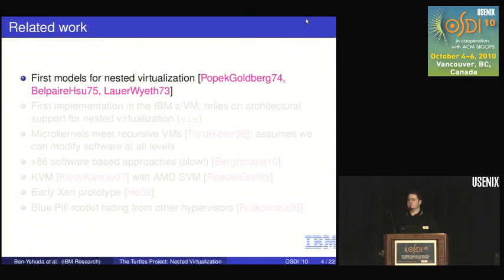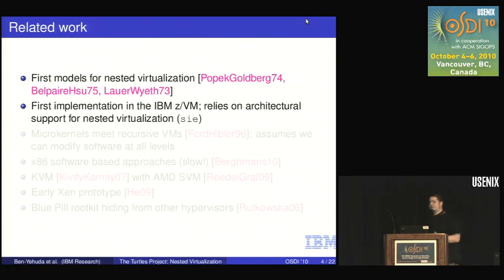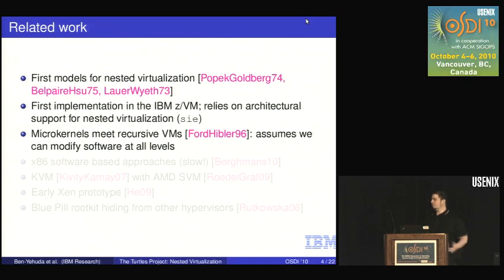Briefly, related work. Nested virtualization has been around since the 70s. Popek and Goldberg, Belper and Sue, Lower and Wythe all showed different models for nested virtualization assuming hardware support. The first implementation I know of was done in IBM mainframes, relying on the architecture having support for multiple levels of hypervisors. There was also a nice OSDI 96 paper called 'Microkernels Meet Recursive Virtual Machines' by Ford, Hibbler and others, but they assumed you could modify every level of the software stack.